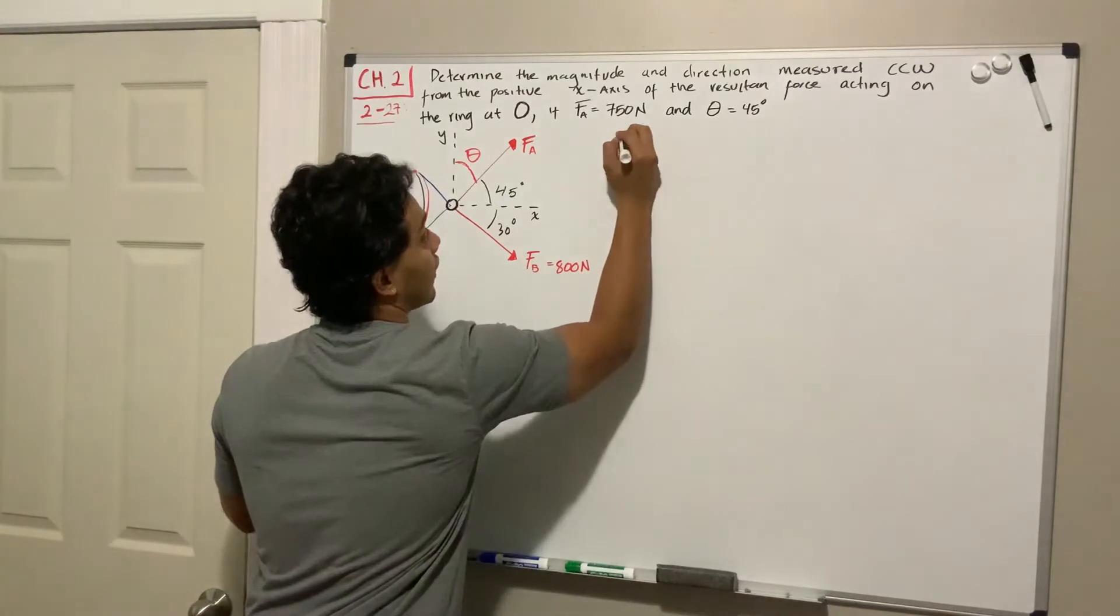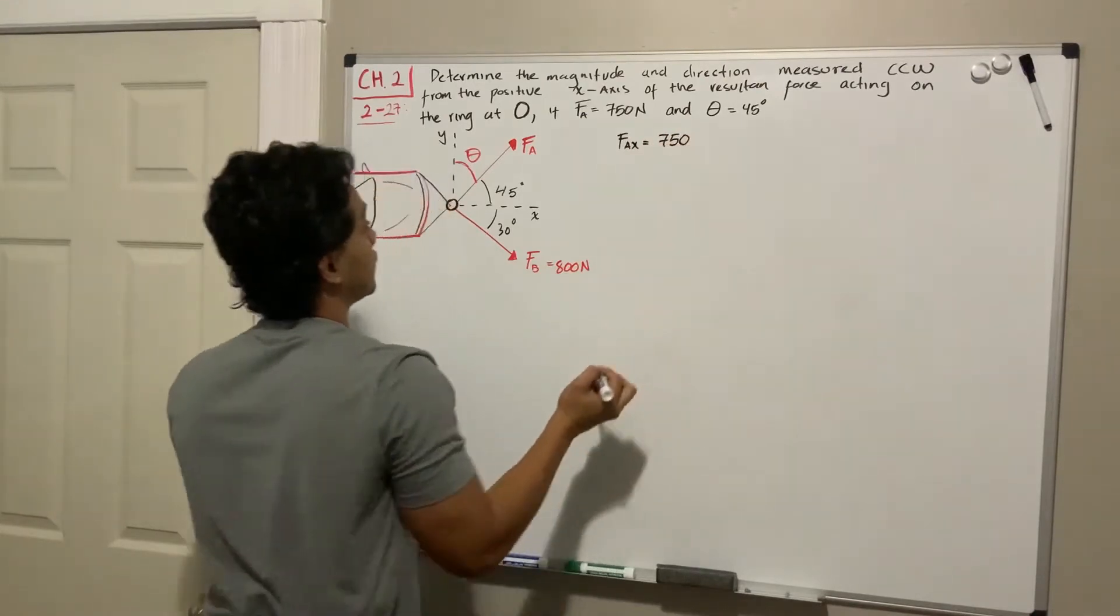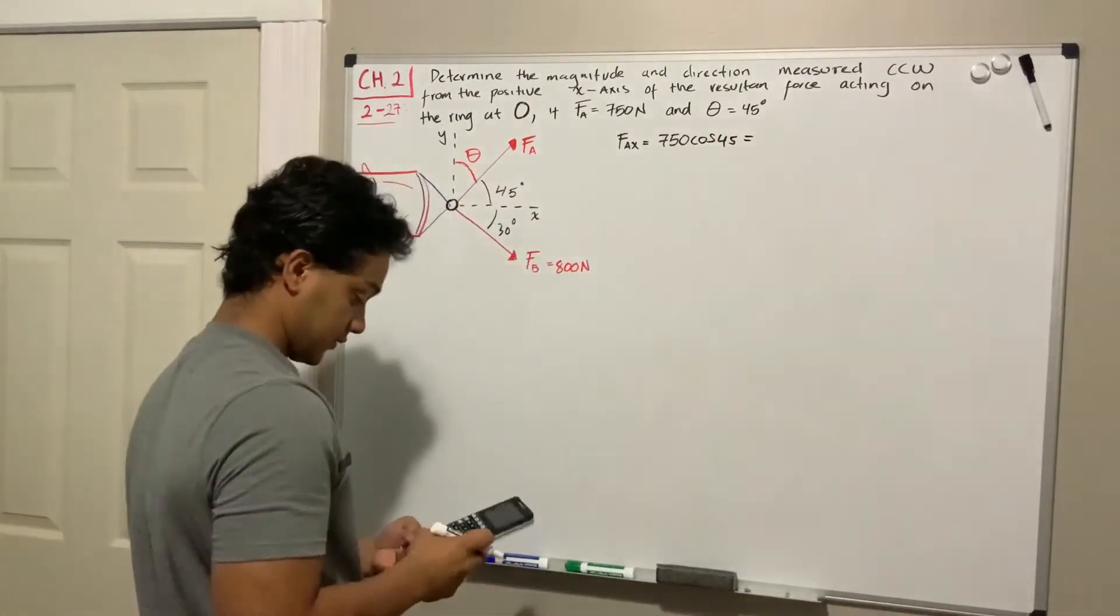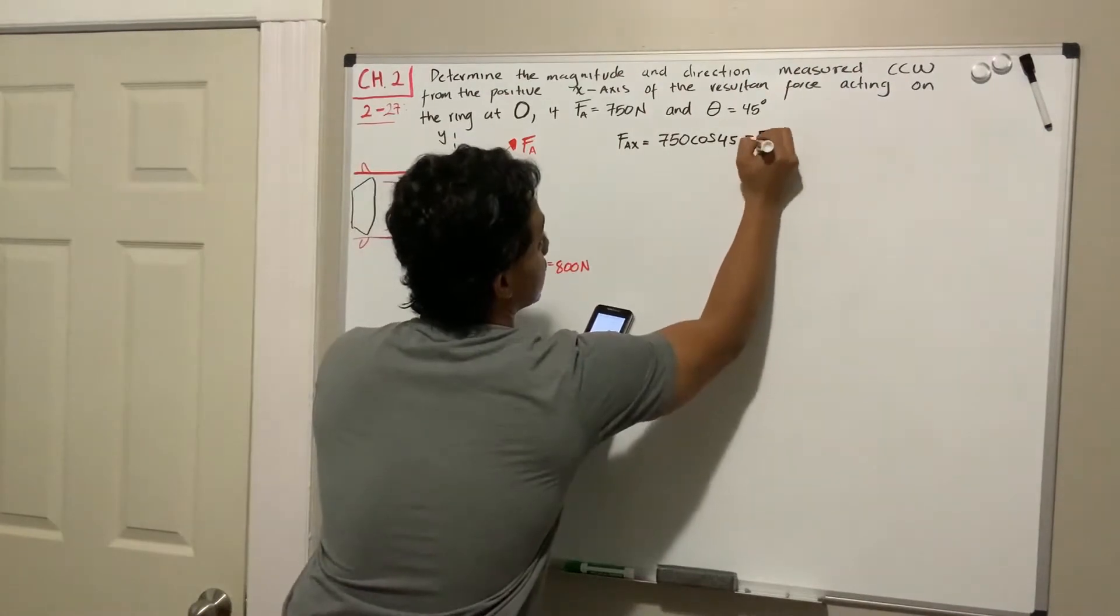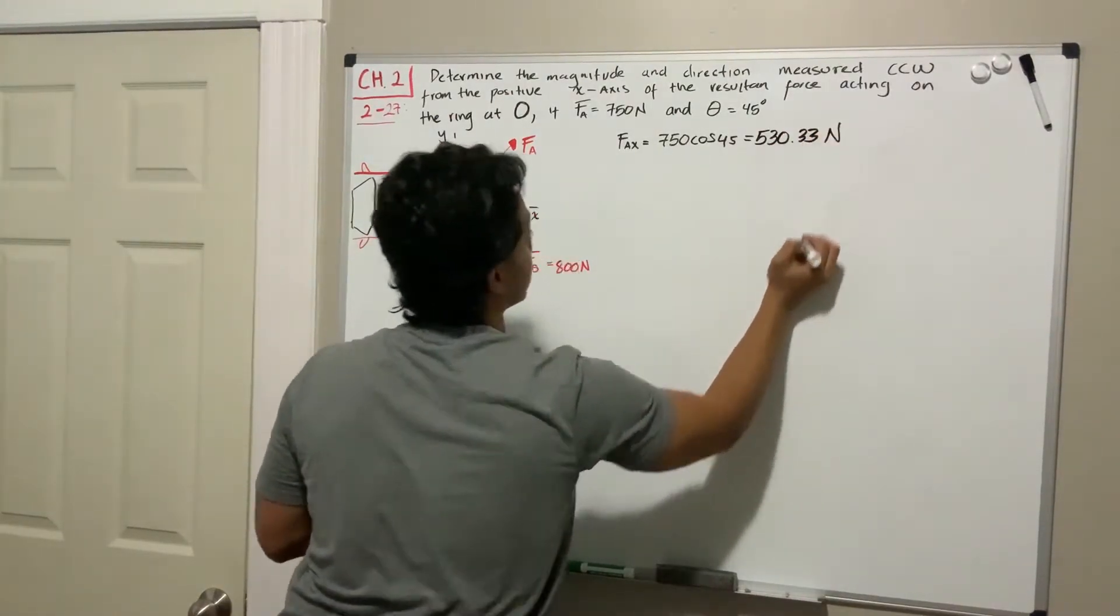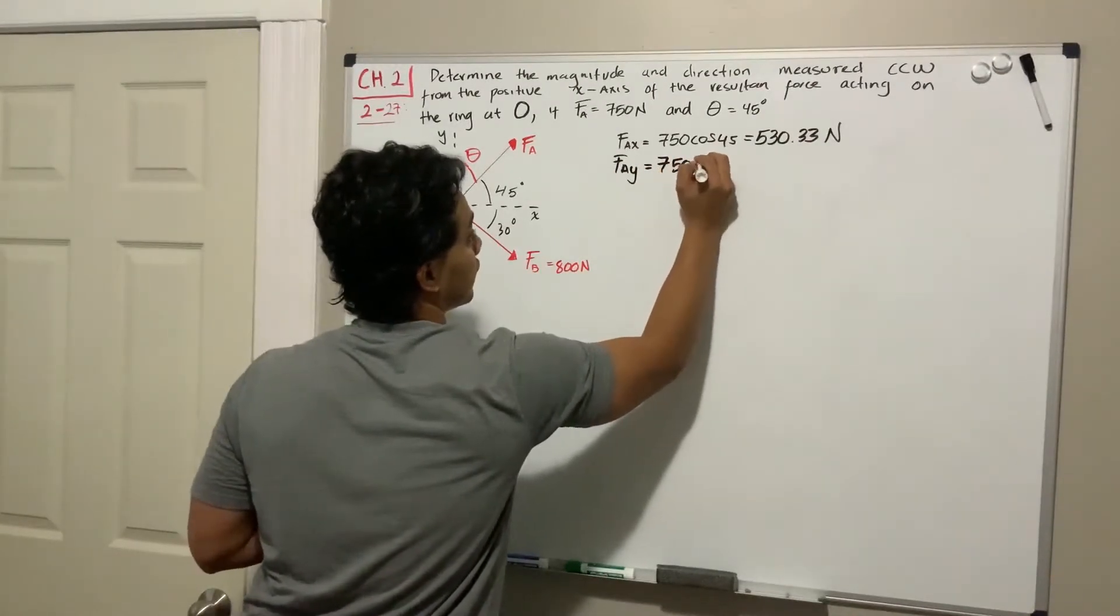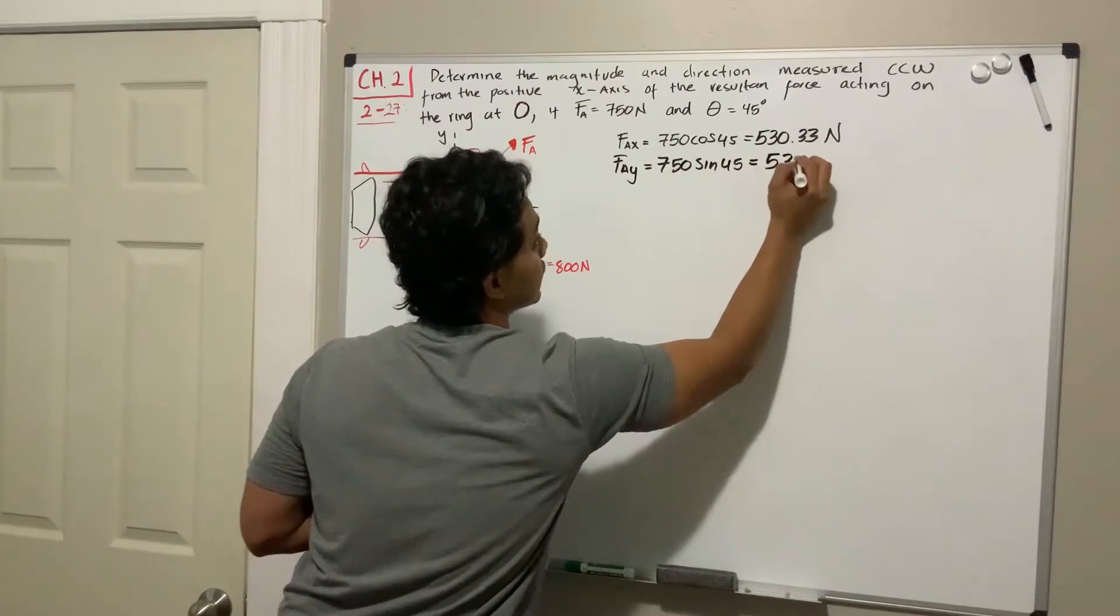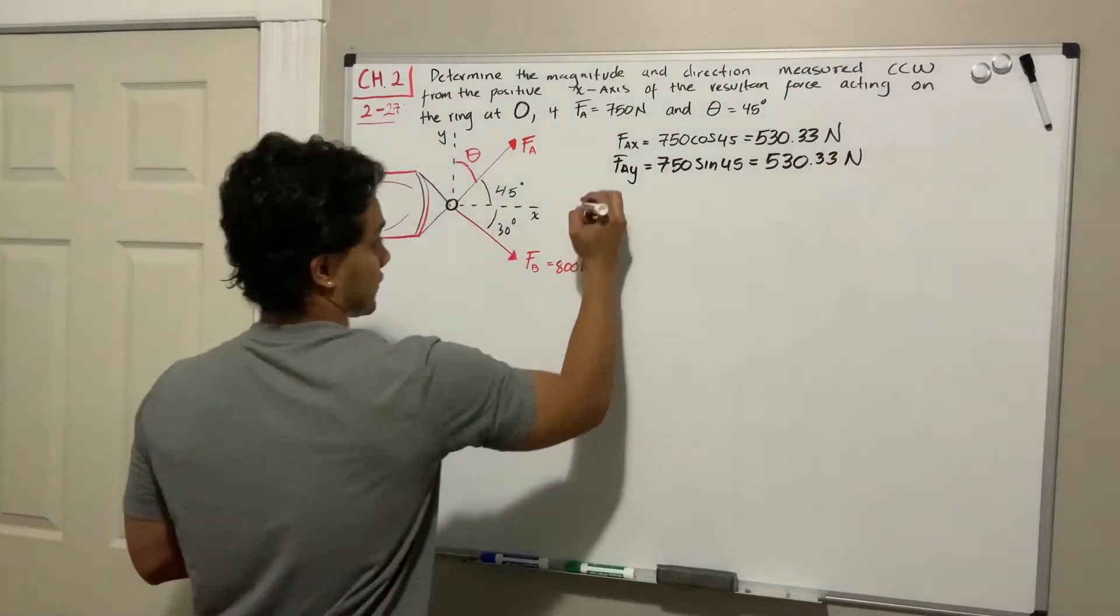Let's start with F_A. F_A in the x-direction is going to be 750 N multiplied by the cosine of 45 degrees, which gives us 530.33 N. F_A in its y-direction is actually the same because 750 sine of 45 degrees is equal to the cosine, so it's 530.33 N. That's it for F_A.